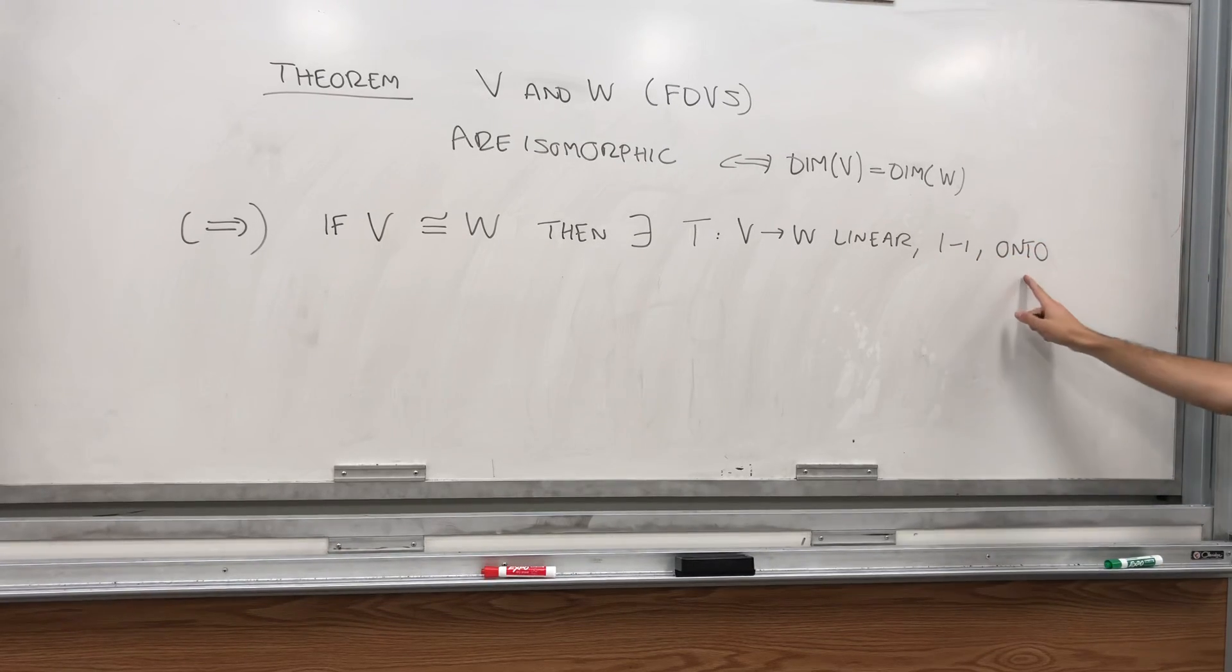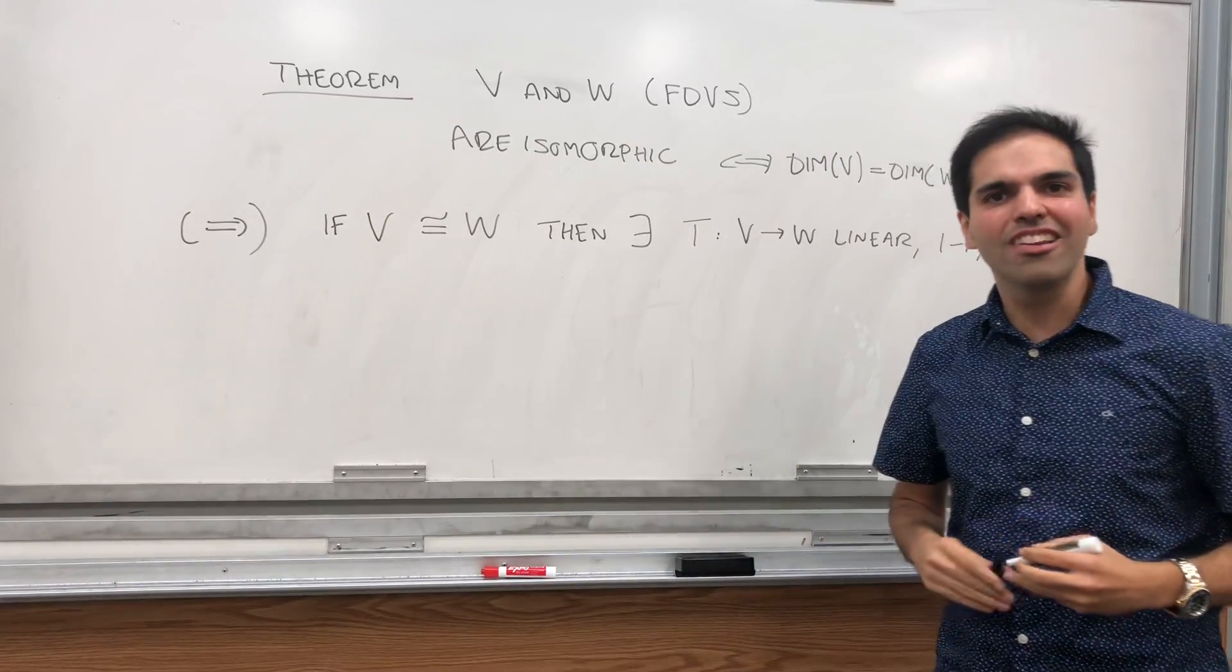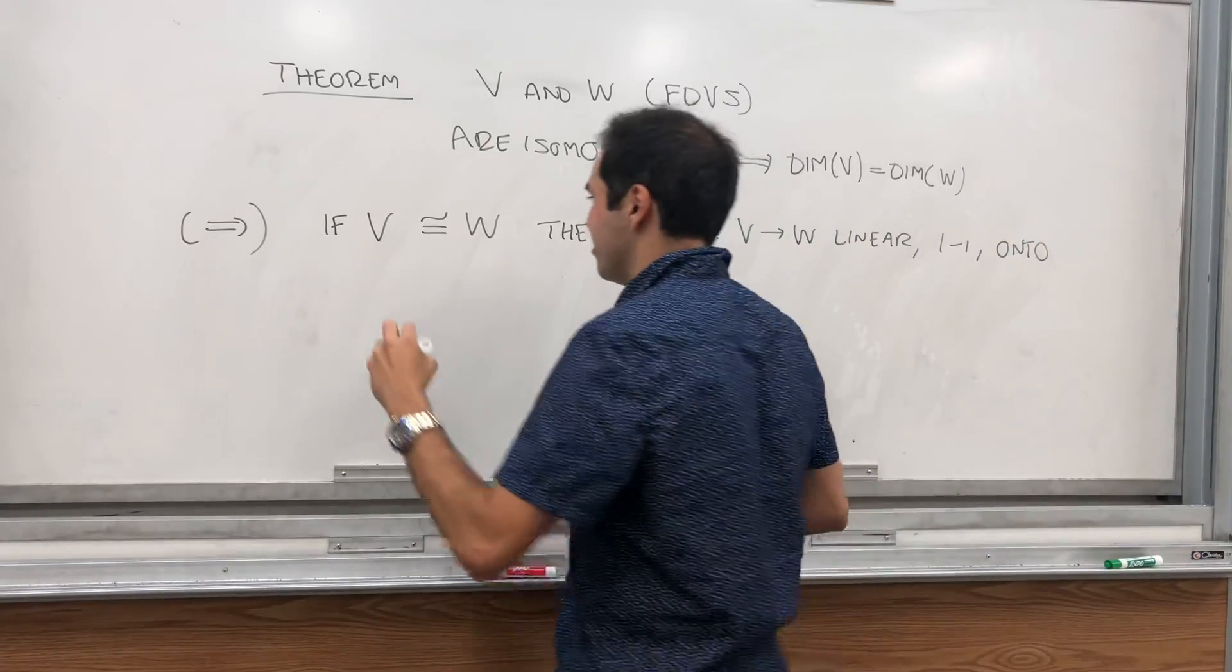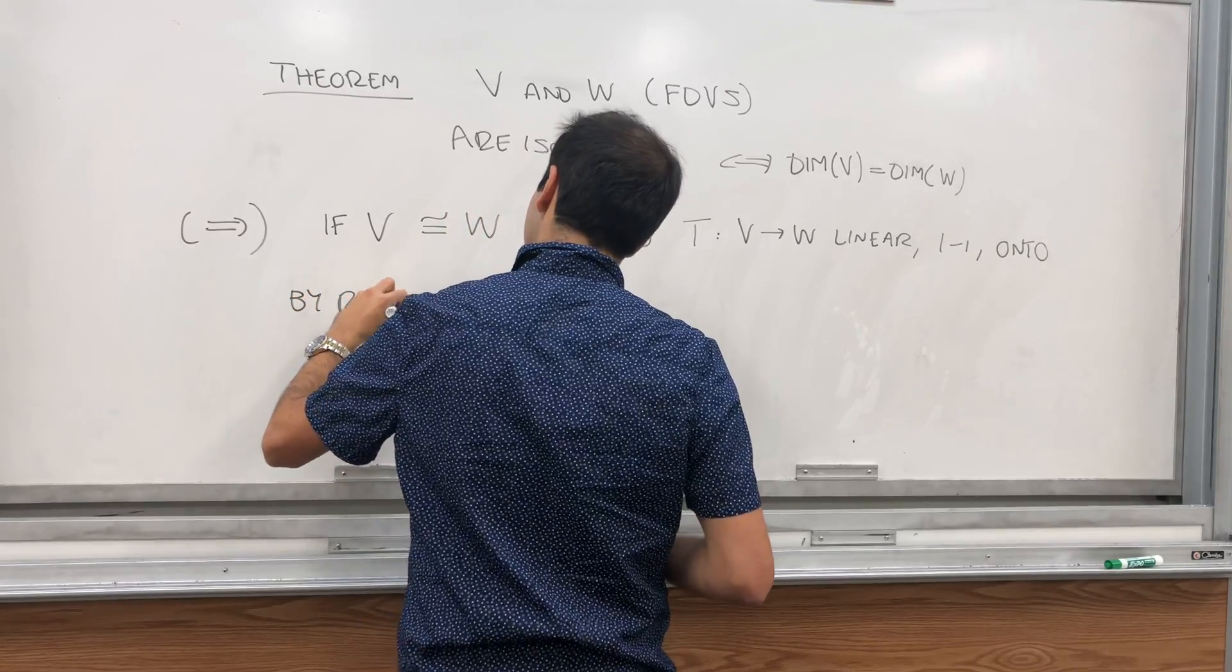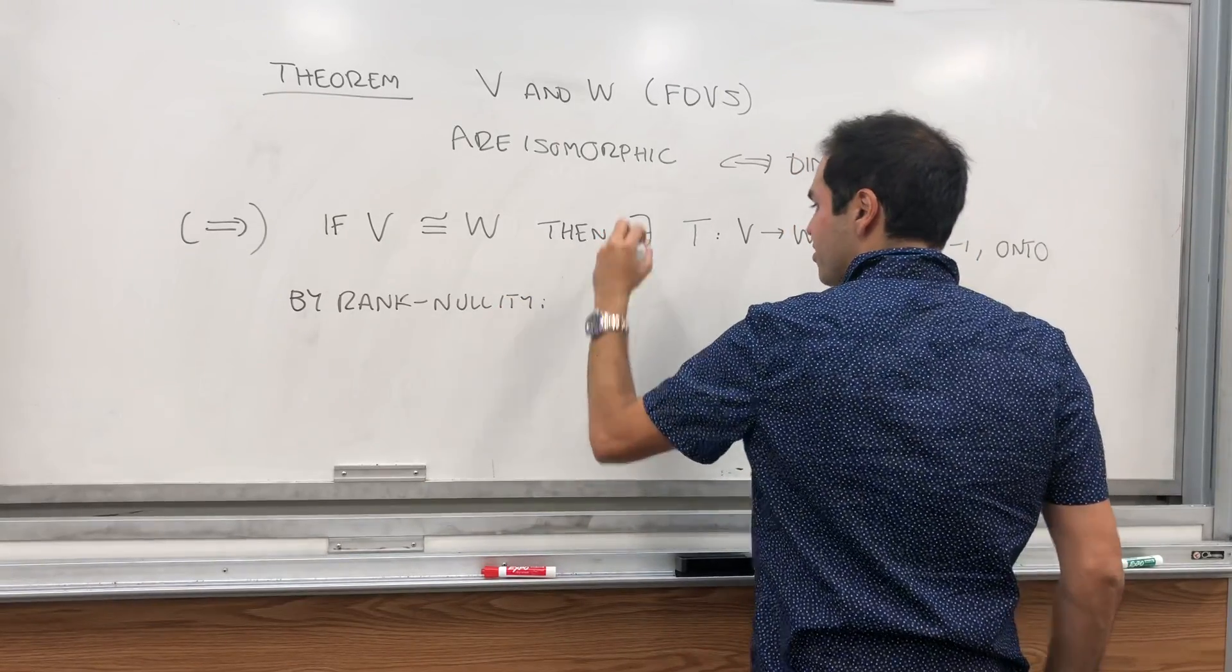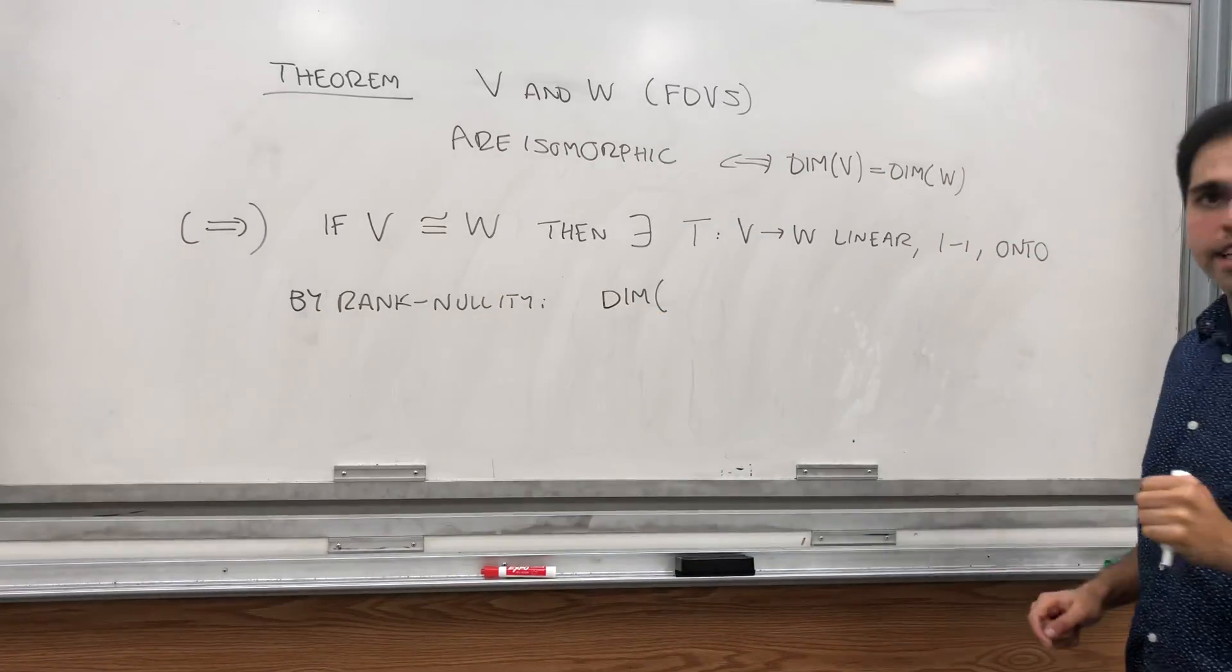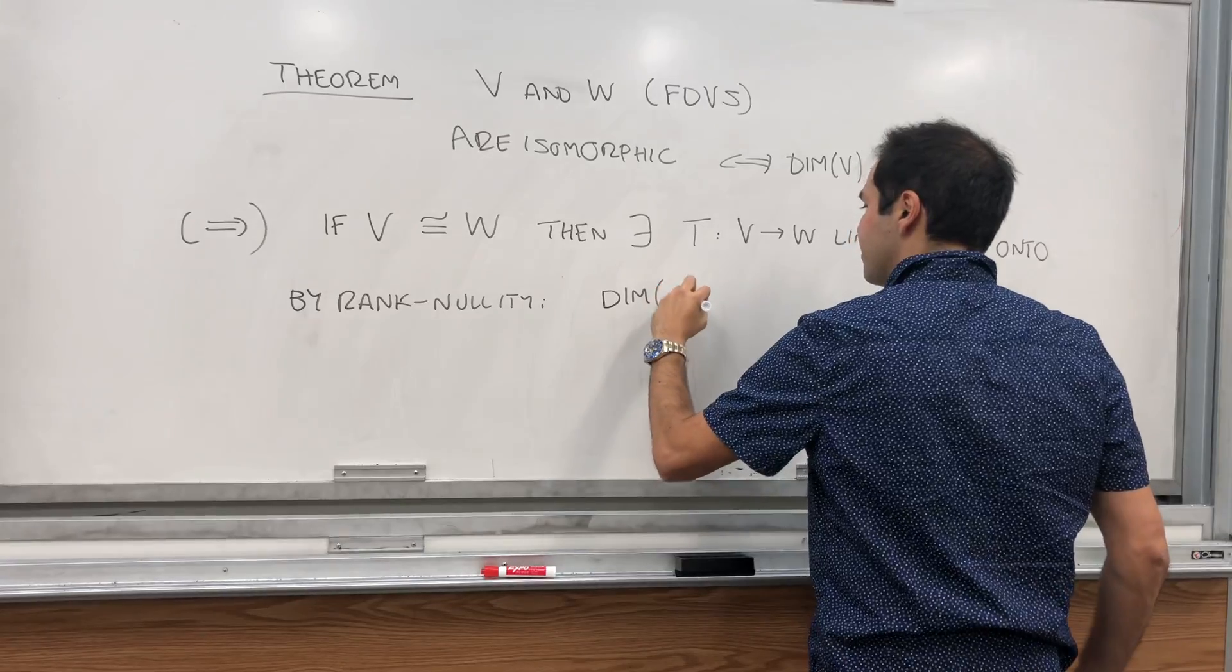Now, because we have one to one and onto, it turns out there's this nice theorem that makes this work. It's what's called the Rank-Nullity theorem or the Dimension theorem some books use. So, by Rank-Nullity, and you'll see in a second why we need that, we have that, what does it say? It says that sort of the null space and the range of your linear transformation, they have to balance out.